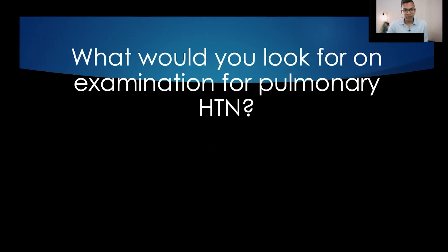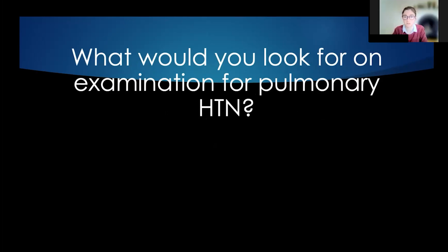What would you look for on examination for pulmonary hypertension? First, a general inspection: work of breathing, peripheral and central cyanosis, and any attached devices — knowing her saturations are 94%, I'd look for supplemental oxygen. I'd inspect the hands for palmar pallor, and also look for a cause of her disease — sclerodactyly, calcinosis, or Raynaud's disease, as may be present in an autoimmune condition.